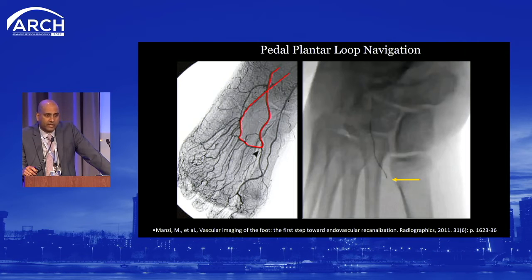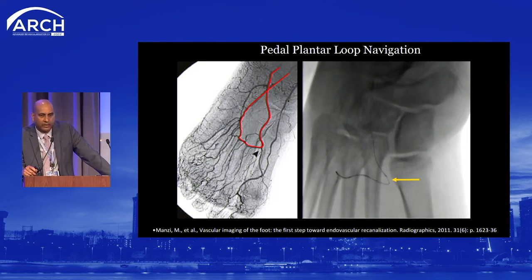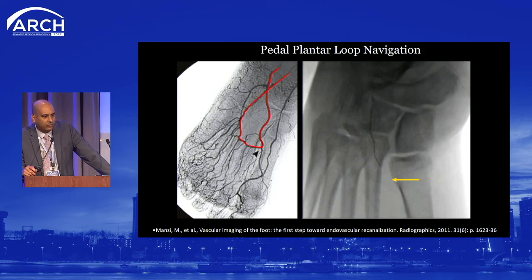As for catheter systems, all the microcatheters you're familiar with from coronary and peripheral work do well here — Regalia, Fielder, Command 18, Command 14, V14, and similar guidewires. Looking at the loop, notice the yellow arrow showing the subtle prolapse or buckling of the guidewire — that's the tip-off indicating the first branch or deep perforating artery. At the base of the third or fourth metatarsal, depending on the obliquity of your AP view, you'll typically find the second branch connecting into the lateral plantar artery.